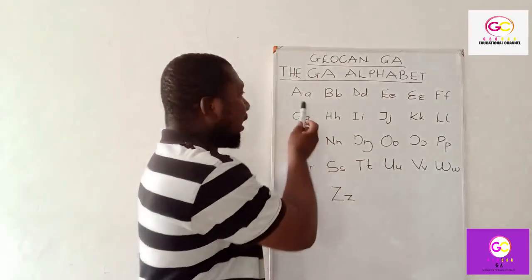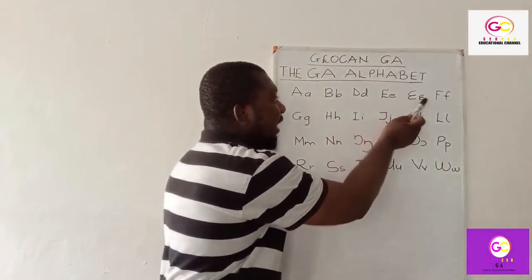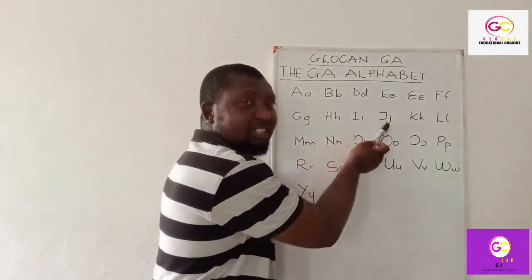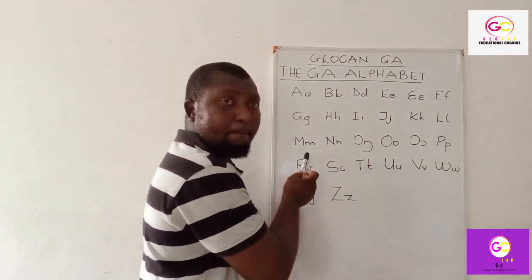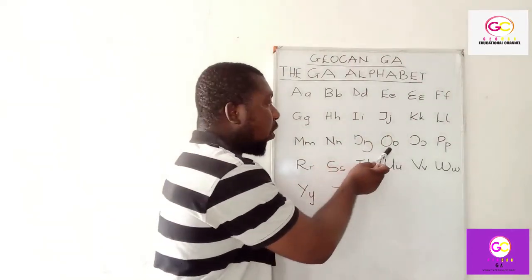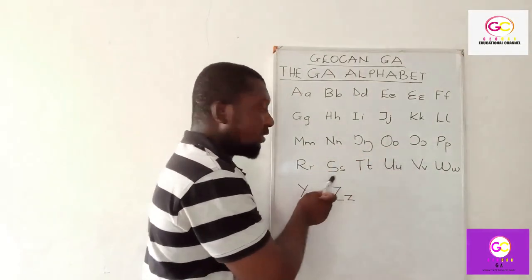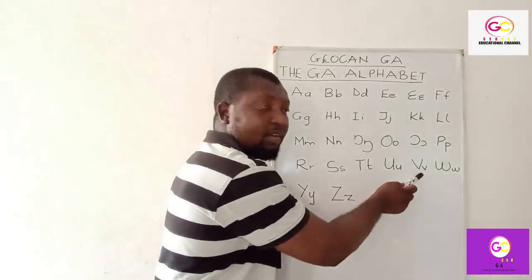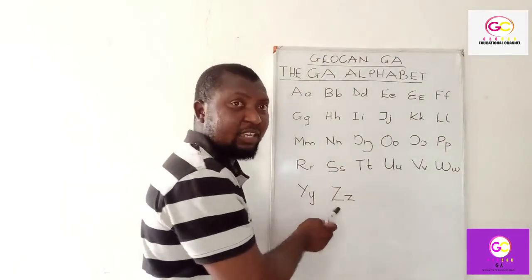So let's repeat the full alphabet: A, B, D, F, F, G, H, I, J, K, L, L, L, O, O, P, R, S, T, T, V, V, Y, Z. Good.